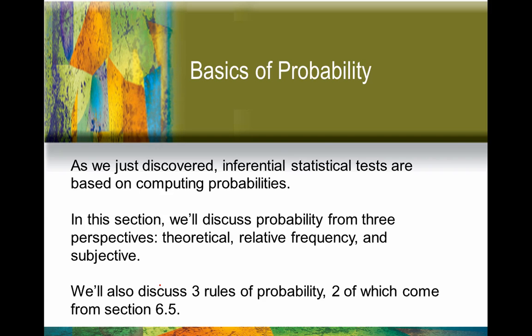There's a theoretical perspective, a relative frequency perspective, and a subjective perspective. These focus on different ways to look at and compute probability. Also toward the end, we'll discuss three different rules of probability, two of which come from section 6.5.